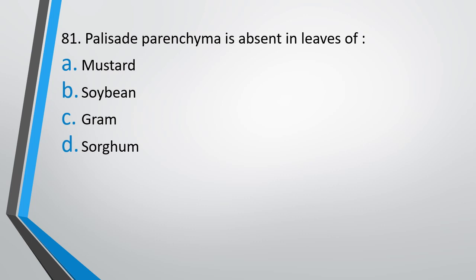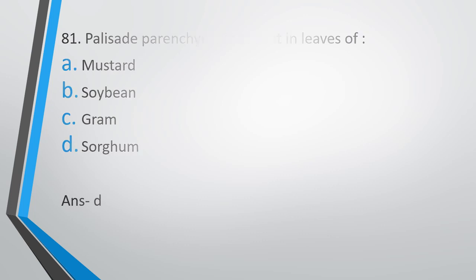Question number 81. Palisade parenchyma is absent in leaves of: (A) mustard, (B) soya bean, (C) gram, (D) sorghum. The correct answer is option D, sorghum.